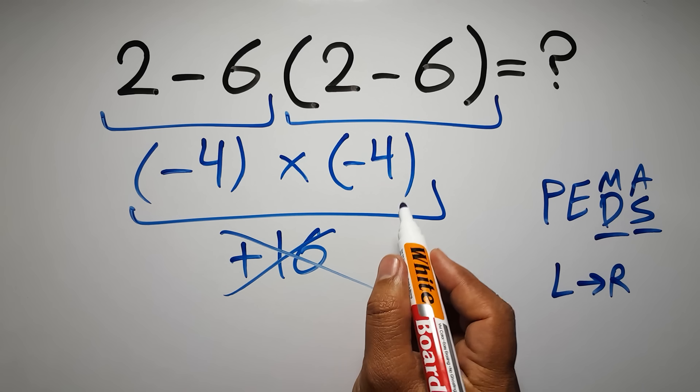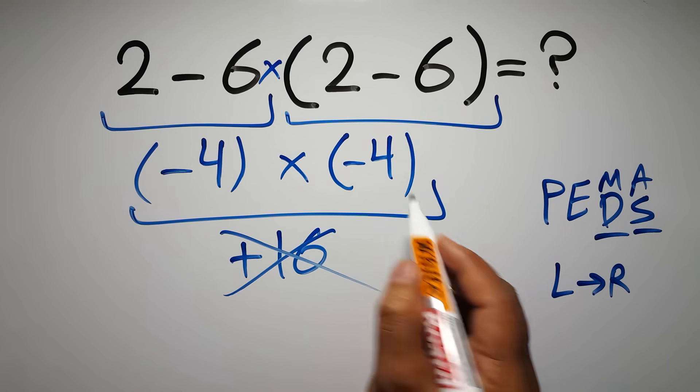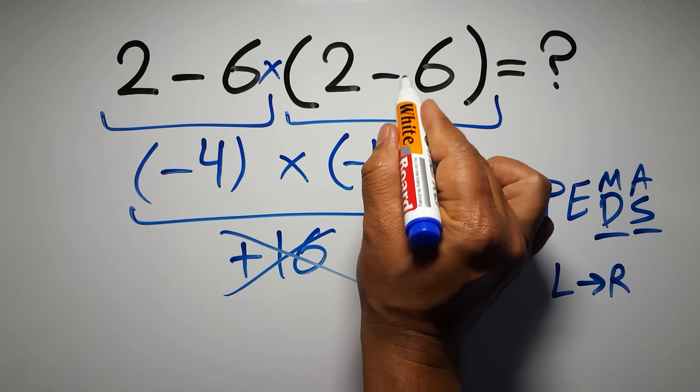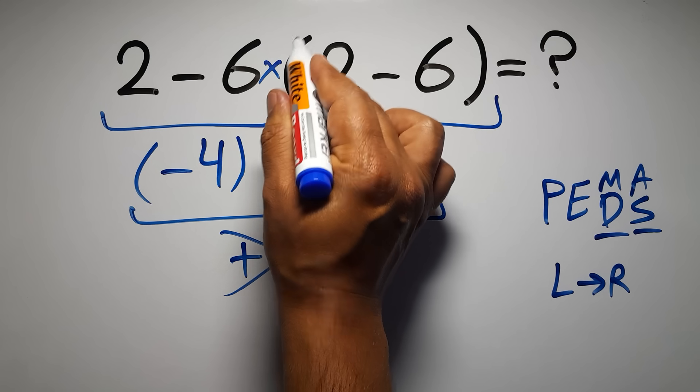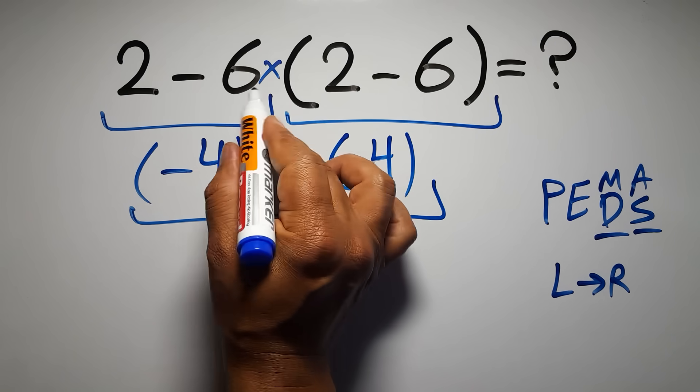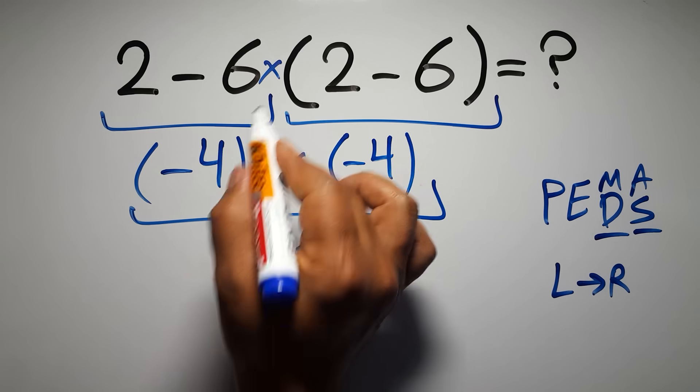In this expression we have one subtraction, one multiplication, and one parentheses. Inside these parentheses we have one subtraction. Here we have a multiplication, because in mathematics when a number is placed next to parentheses it means multiplication, and we usually don't write the multiplication sign for brevity.